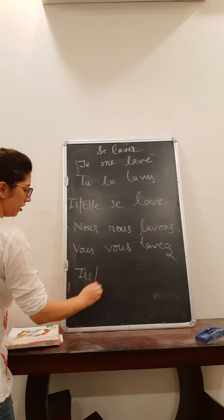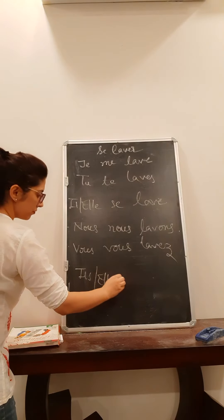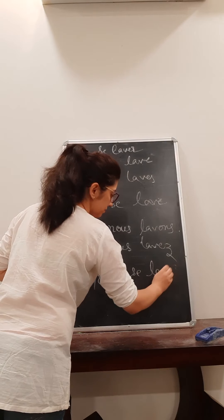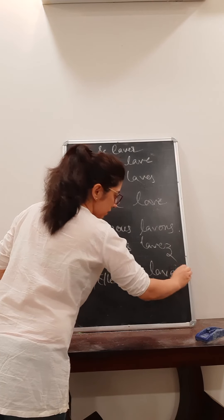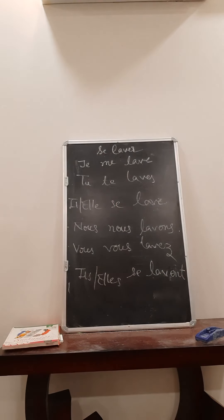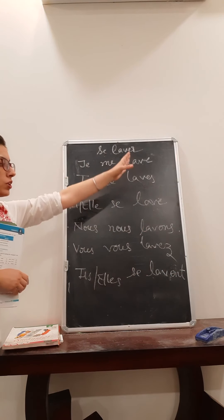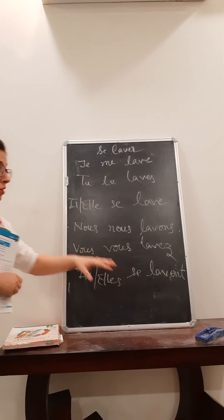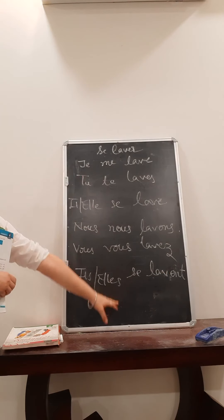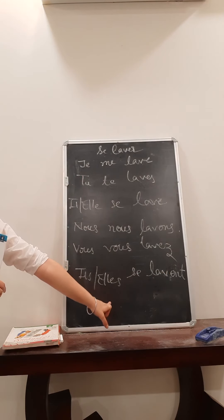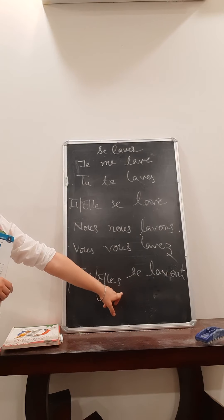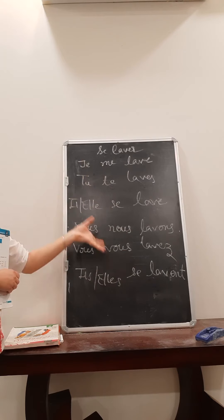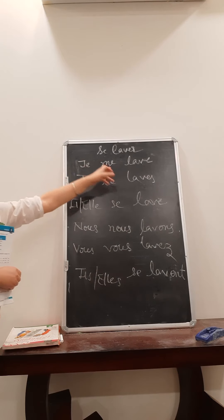Then 'ils/elles se lavent' with 'e' and 't'. You are already knowing how to conjugate ER-ending verbs — you go about it the same way as we have already done. The pronoun is the basic thing that makes pronominal verbs different from other verbs.